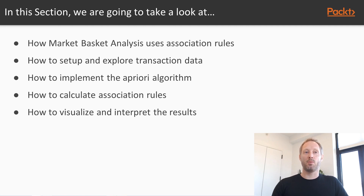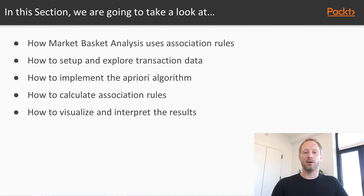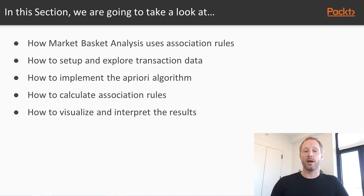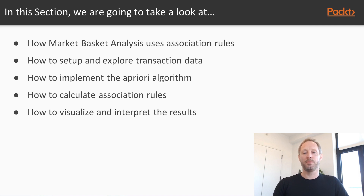In this section, we will look at how market basket analysis uses association rules to find products that go well together so that you can develop a recommendation engine. After introducing the concepts, we move to the implementation part and explore how you can set up and analyze your transaction data and get them ready for the analysis. Then we look at how you can implement the a priori algorithm, which makes this analysis manageable from a computational perspective. Next we look at how to calculate the association rules from your data and then how to visualize and interpret the results.